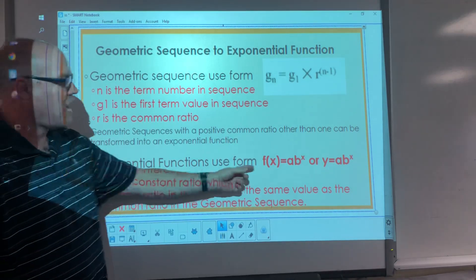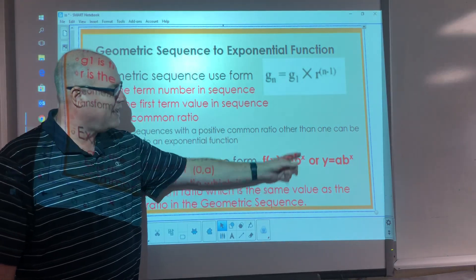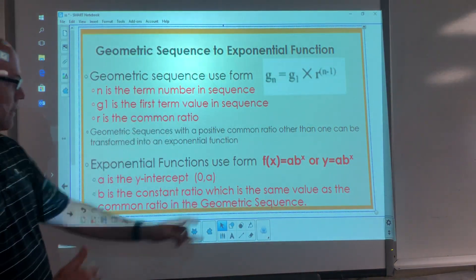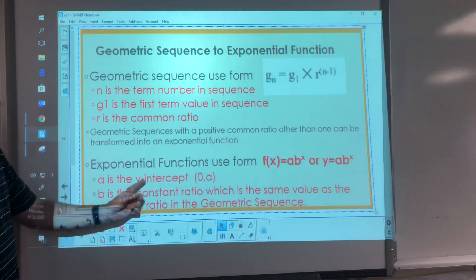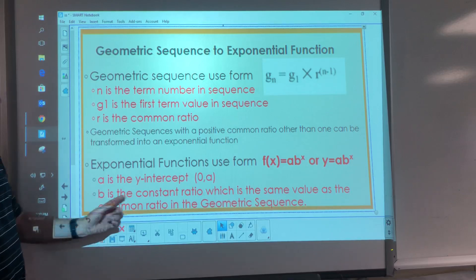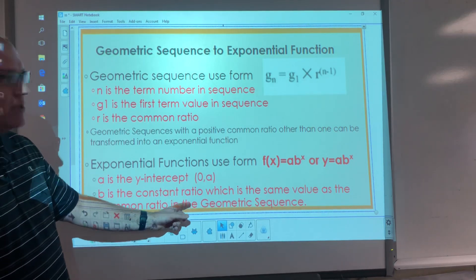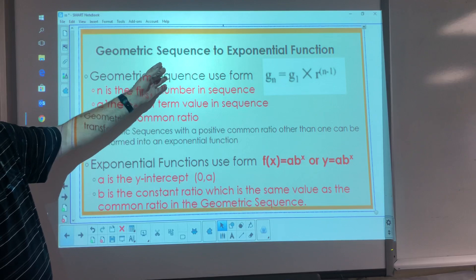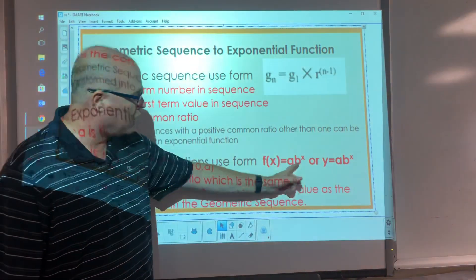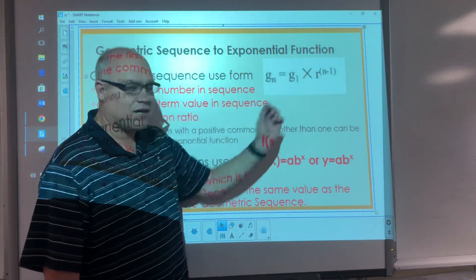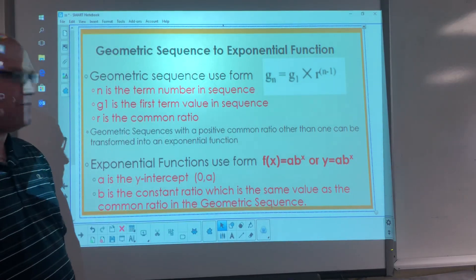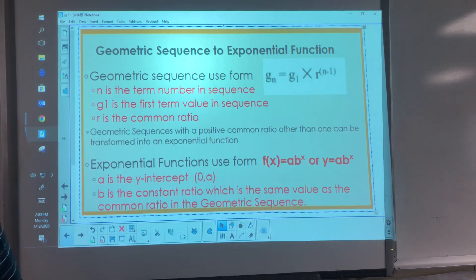So the form we're going to use is f(x) equals a times b to the x power. Please note that the x, the variable x, is the exponent of b. And a is going to be the y-intercept because it's always going to be zero comma a. b is the constant ratio, which is similar to the common ratio in geometric sequence. So geometric sequence, we call it r. Exponential function, it's going to be called the b. But they basically are the same thing. The common ratio or the constant ratio mean the same thing as we build our exponential function.